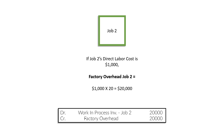Going back to the example, if job two's direct labor cost is $1,000 and our predetermined overhead rate is 20, we multiply $1,000 by 20 and get $20,000. So when we apply factory overhead, we don't debit the factory overhead account anymore — we take it away from the factory overhead account and put it into the work-in-process inventory of whatever job we're assigning it to.